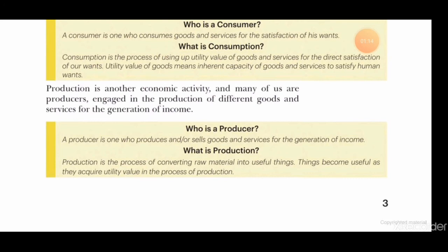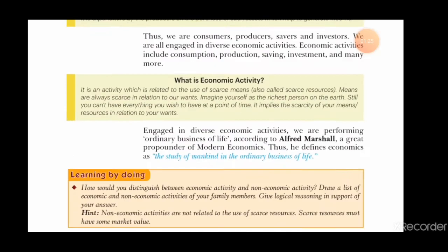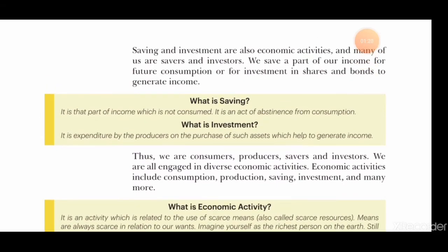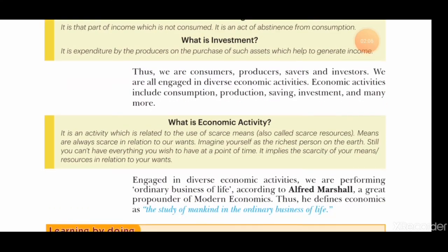Production is when we convert raw material into something useful — we add utility value to it, that becomes our production. Next is saving: it is that part of income which is not consumed. For example, if you earn ten thousand and spend six thousand, the four thousand you saved is your saving. When you take a part of that saving and invest it in a bank or elsewhere to earn profit, that becomes your investment.